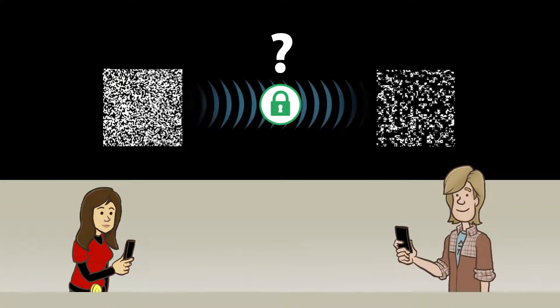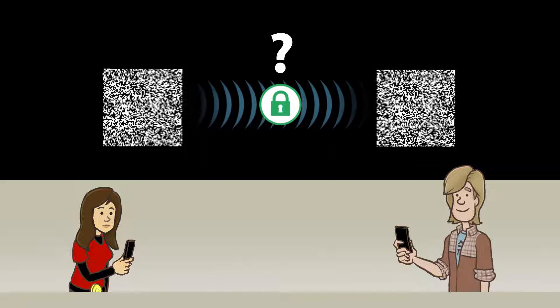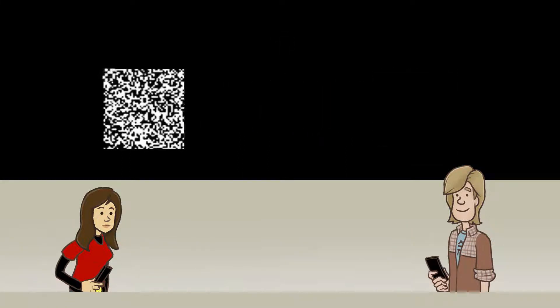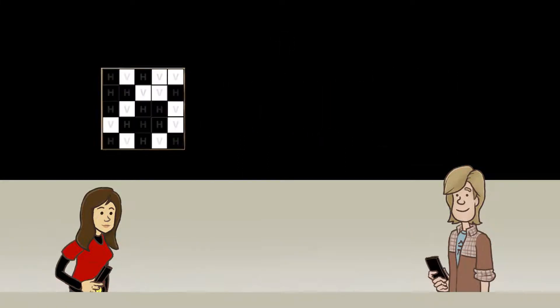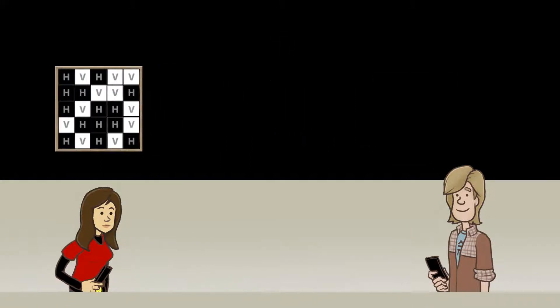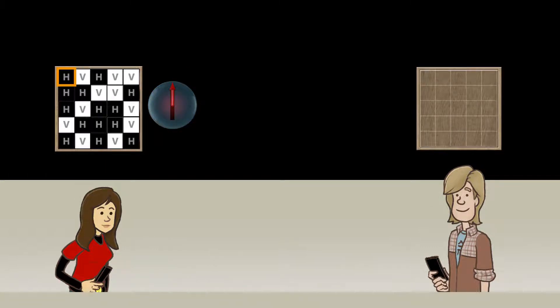Generating a random pattern is thus very easy in quantum physics. However, how can we securely transmit a given random pattern as a one-time pad so that only Alice and Bob can share it?